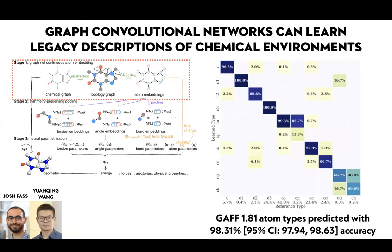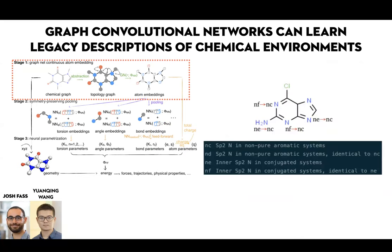If we take the embeddings from just the first stage and cluster them, can we learn a GAFF atom type? There are a lot of GAFF atom types — a lot of carbons in particular — and it does misassign some of these, but they're misassigning in a way that I would have trouble assigning the specific GAFF atom types myself. In this case, it's sometimes confusing NF with NC — an inner SP2 nitrogen in a conjugated system identical to NE, but not in a non-pure aromatic system. So I wouldn't know exactly which one to assign either.